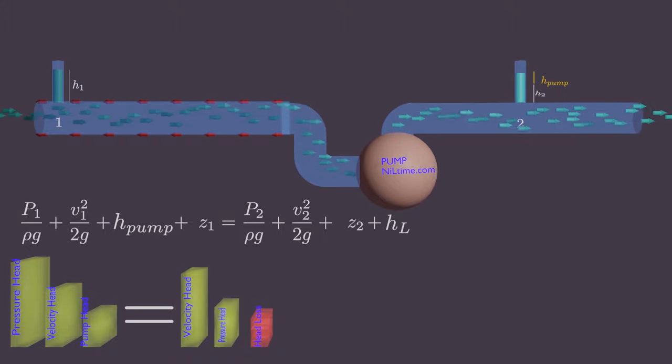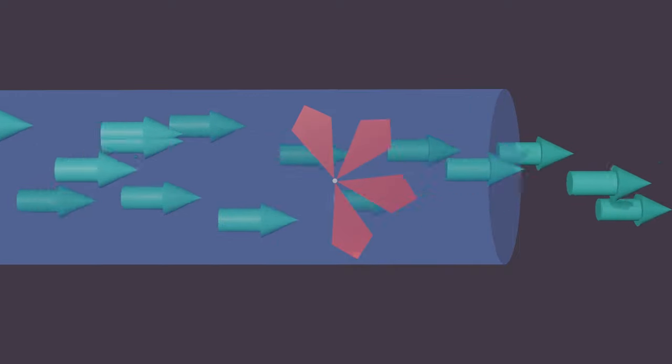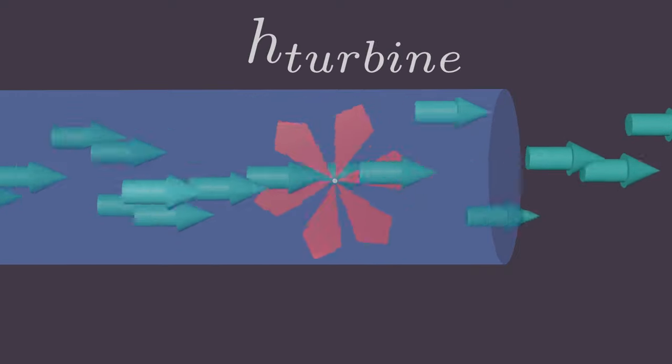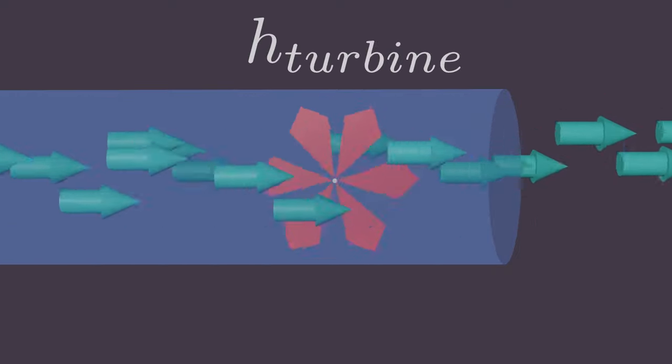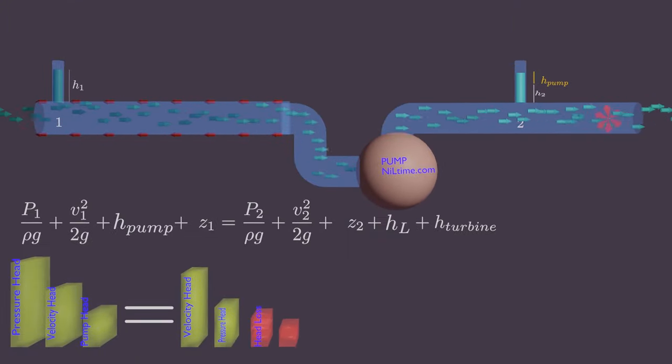Now, let's add turbine too and extract some of this fluid energy. Turbine drops the pressure and velocity even more.